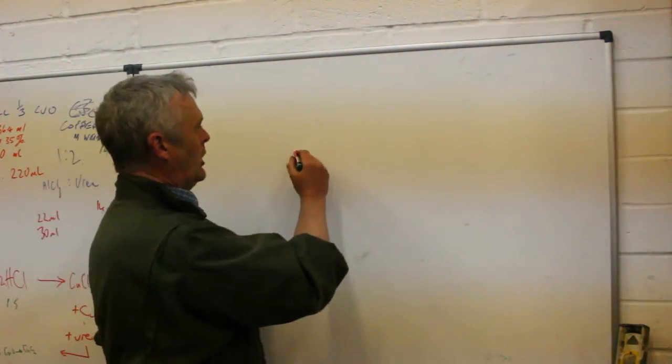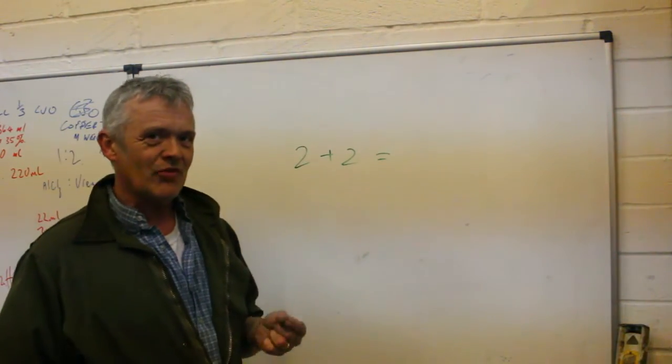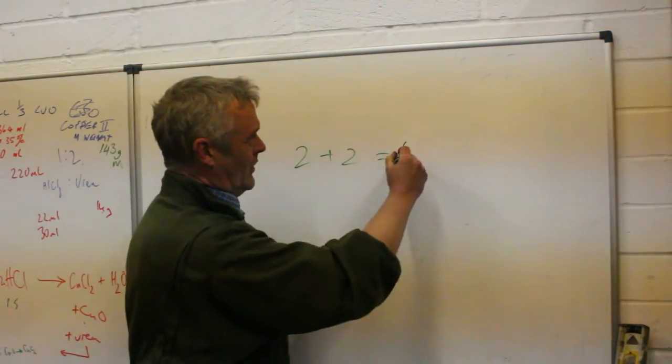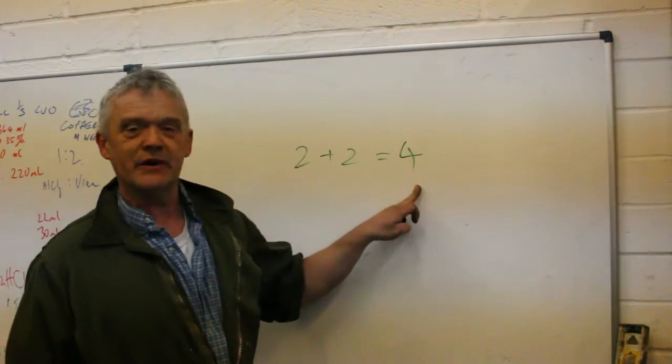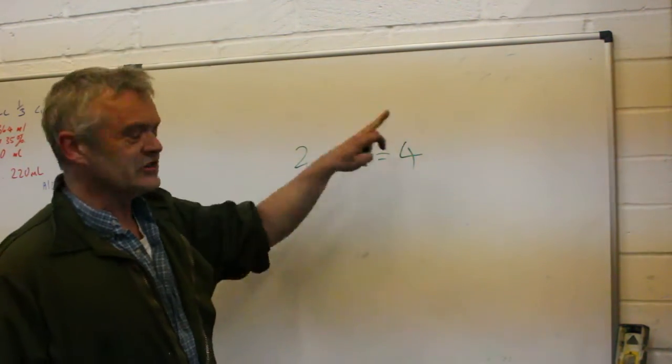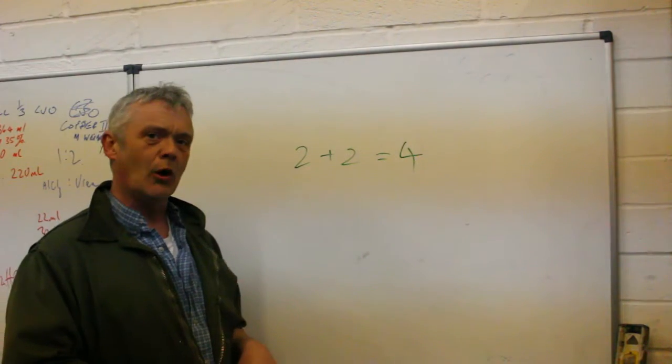So let's take a really simple example of 2 plus 2. Nobody, but nobody, in their right mind is going to argue that that doesn't equal 4. We always know that 2 plus 2 equals 4. Now, that looks like a truth. Actually, it's only a truth for the universe in which we operate in.